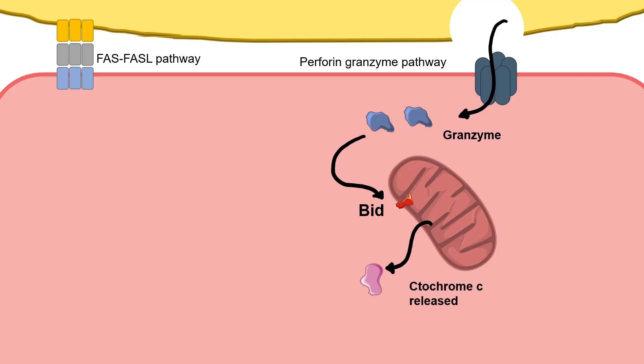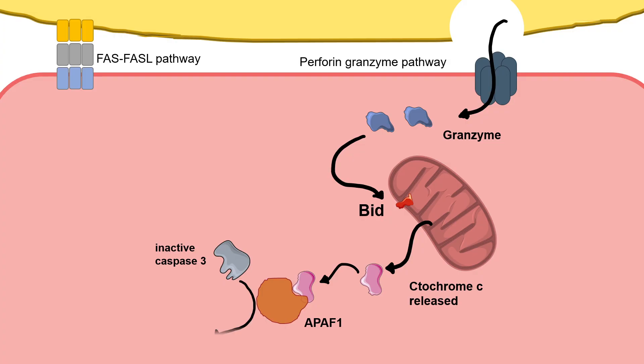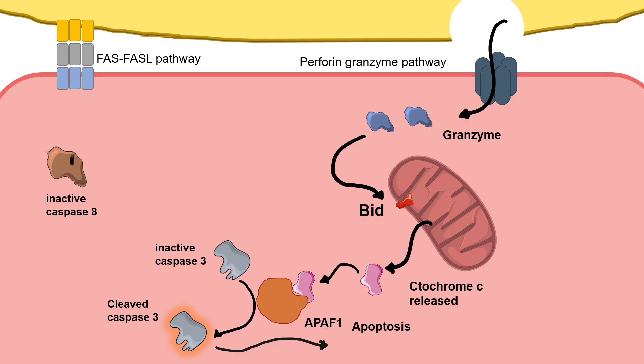The perforin and granzyme pathway activates enzymes that lead to cleavage of BID, causing cytochrome release into the cytoplasm and activating several caspases. Ultimately, cleaved caspase 3 takes charge and leads to apoptosis.